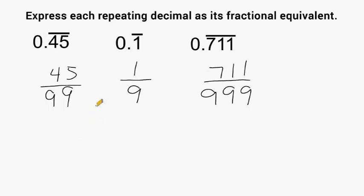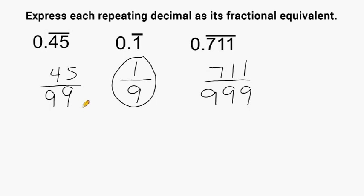Now what you do is take each one of these fractions and express them in lowest terms. One-ninth is already in lowest terms, so zero point repeating one is equivalent to one-ninth. Now 45 over 99 can be reduced by a factor of nine. If we divide 45 by nine that gives us five, and if we divide 99 by nine that gives us eleven. So five over eleven equals the repeating decimal zero point repeating four five.